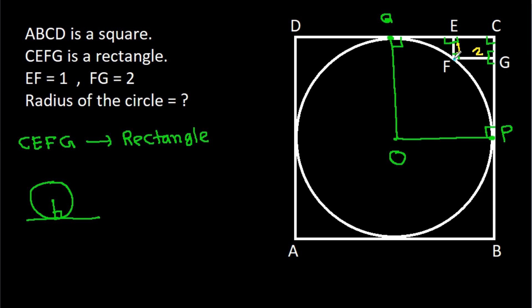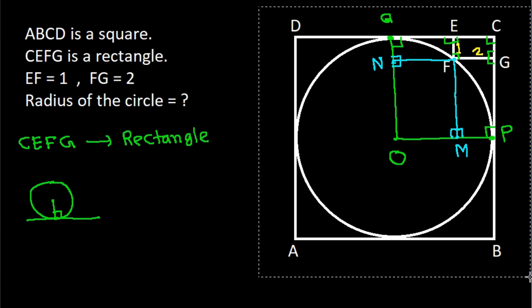From point F, we draw a perpendicular on OP, and from point F, we draw a perpendicular on OQ. Suppose the foot on OP is point M and the foot on OQ is point N.